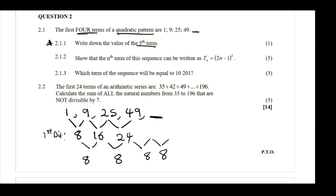Since the second difference is 8, we add 8 to 24 to get the next first difference, which is 32. Then we add 32 to 49 to get the fifth term: 49 plus 32 equals 81. You can verify the pattern — adding 16 to 9 gives 25, and adding 24 to 25 gives 49. So the fifth term is 81.